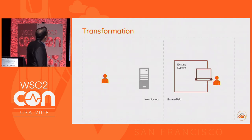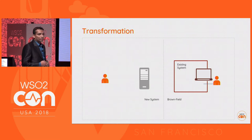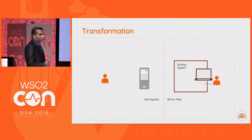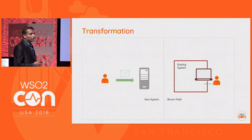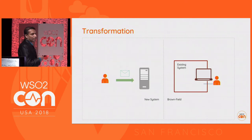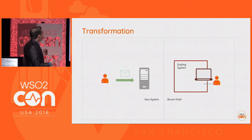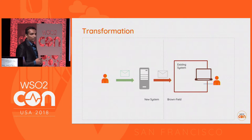On the right we have the existing system in the brownfield and we are building a new system. We receive a message in some message format but we can't send it as-is to the existing service — we need to do some kind of transformation to make it compatible with the existing system. That is what is meant by transformation.